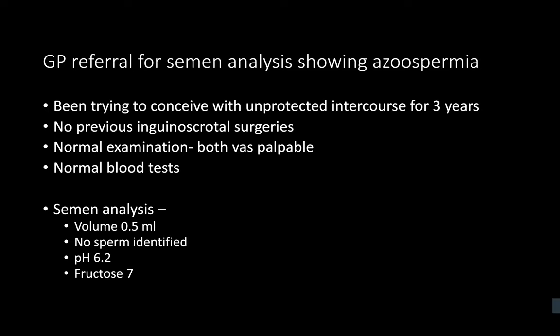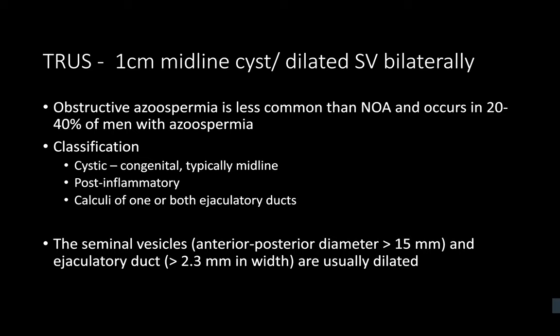Imaging options include MRI scan of the pelvis to assess for ejaculatory duct cysts and seminal vesicle dilatation, and transrectal ultrasound to assess for significant dilatation of the seminal vesicles and ejaculatory ducts. The size criterion for dilated seminal vesicles on MRI is an anteroposterior diameter of more than 15 millimetres. Imaging in this case shows a 1 cm midline cyst with dilated seminal vesicles bilaterally.